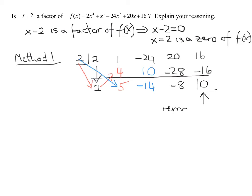And remember, if when you divide x minus 2 into the polynomial, and if the remainder is 0, it means that x minus 2 is a factor. And your reasoning is when I do the division, the remainder is 0.